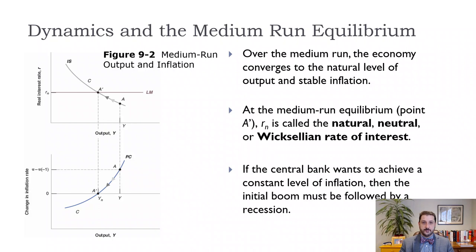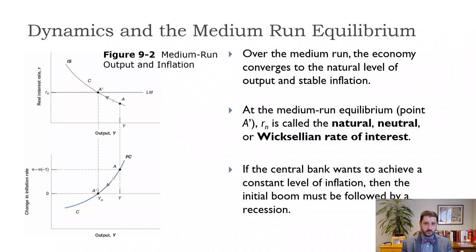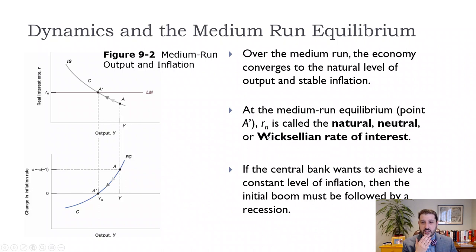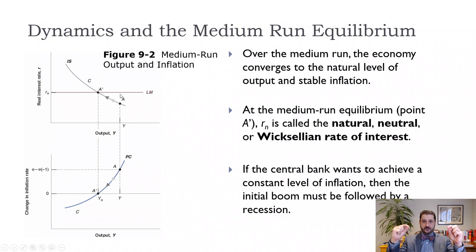In the short run, we will be at our equilibrium point, but we can be above or below the medium run equilibrium point. In the medium run, we want to get back to this natural level of output and the natural rate of unemployment. One way that's going to happen is that inflation is going to adjust, and we're going to get back to the real interest rate associated with the natural level of output. If the LM curve shifts up or down, that will change the real interest rate, and there will be some level of the real interest rate associated with the natural level of output.